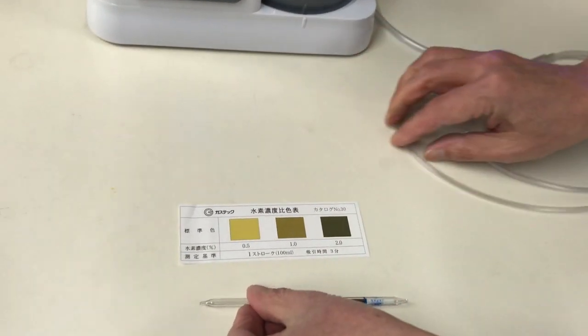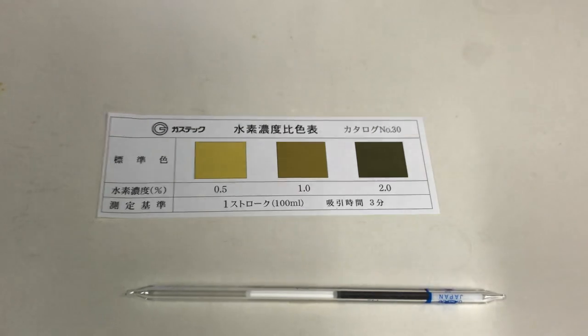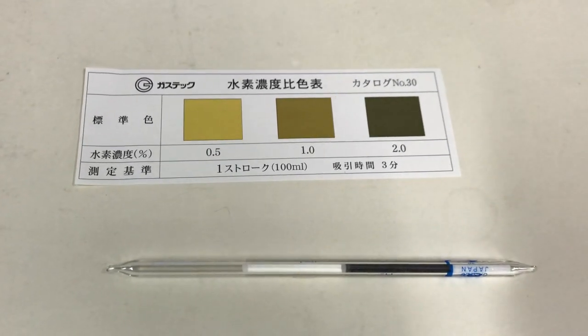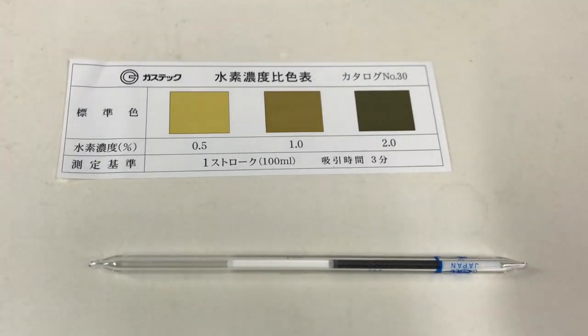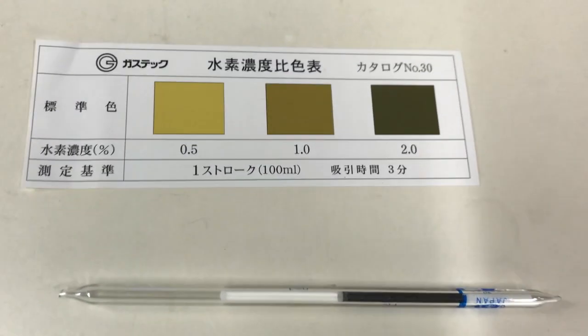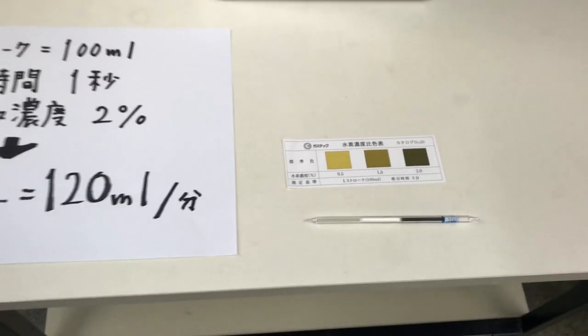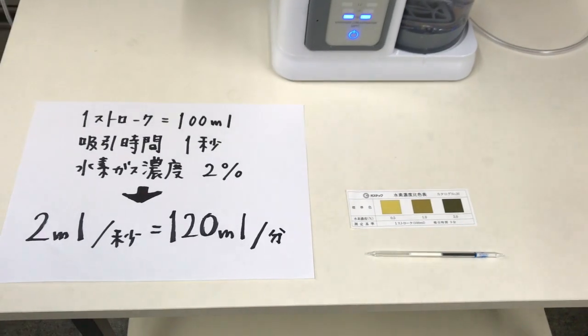And then what they're going to do based on the color, it lets you know in 100 milliliters the percentage of hydrogen gas that was within that test. It has at least 2 milliliters or 2%. So in 100 milliliters, you're looking at 2 milliliters in that one second.